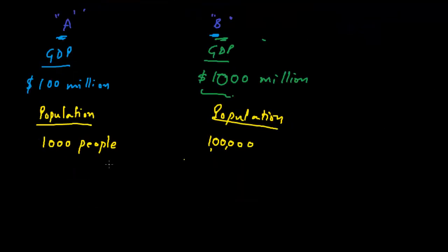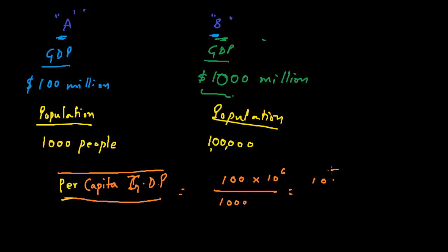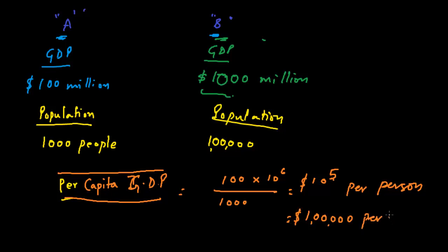Now let's see what will happen. When we say per capita, it simply means per person. So the per capita GDP means GDP per person. For country A, that would be one hundred million dollars — that is 10 to the power 6 — divided by one thousand people, which equals 10 to the power 5, that is one lakh dollars per person per year.